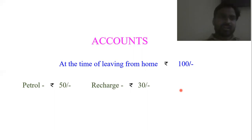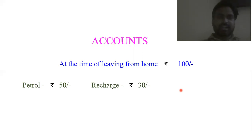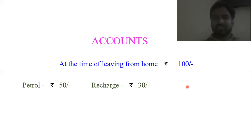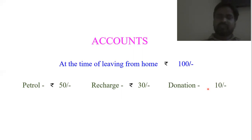But our mind is not agreeing with it. The mind is arguing that if we donate the entire amount of rupees 20, then what will be left with us? So neither we can let our heart go down nor we can let our mind go down. So then we have donated rupees 10 and we have kept a balance of rupees 10 with us.